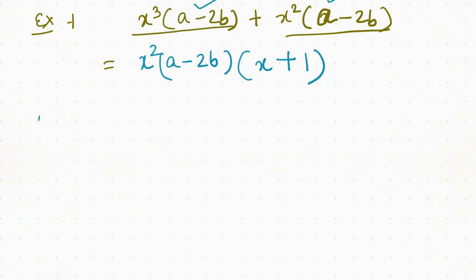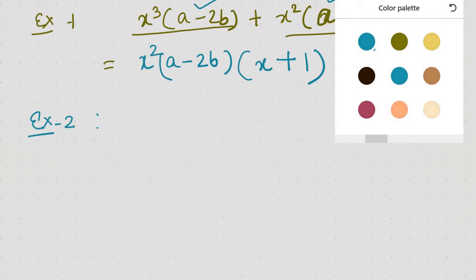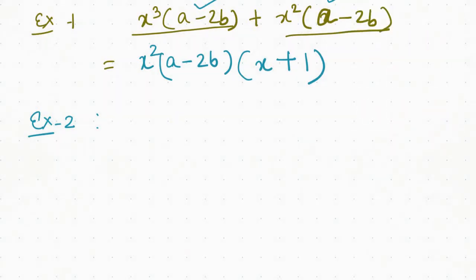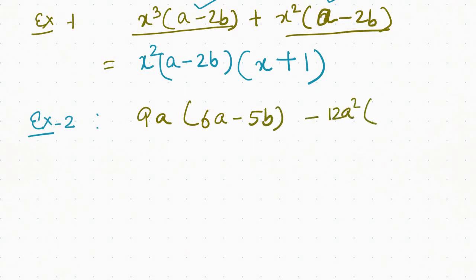If we have to do this, we can see how many things we can manipulate in the expression. Now, let's take a look at the example. If you have a question, you can visually see: b times 9a whole into 6a minus 5b, minus 12a squared whole into 6a minus 5b. Here we will put across the factors of 6a minus 5b.